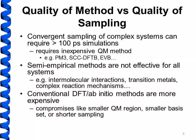Specifically, what we can address using CHARM Turbomole is issues with sampling and accuracy of methods. When we have a reasonably complex system, in order to perform a simulation long enough to say something quantitative, we need convergent sampling — simulating the system long enough to get a distribution of a certain property to a significant degree of statistical convergence. As a rule of thumb, for most systems of chemical interest, we would need at least 100 picosecond simulations.